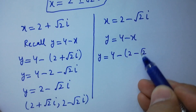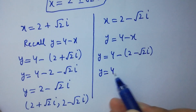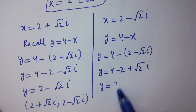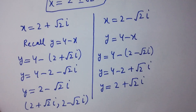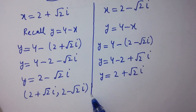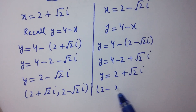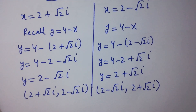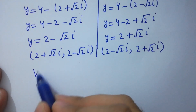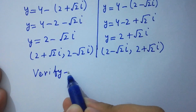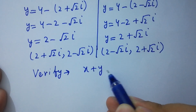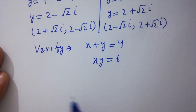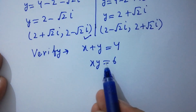When x equals 2 minus √2·i, y equals 4 minus (2 minus √2·i), giving y equals 2 plus √2·i. So the solution pairs are: x equals 2 plus √2·i with y equals 2 minus √2·i, and x equals 2 minus √2·i with y equals 2 plus √2·i. In the last step, we verify x plus y equals 4 and xy equals 6.